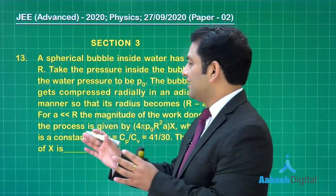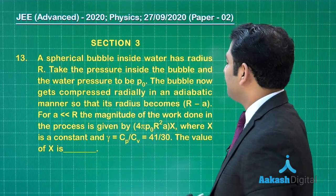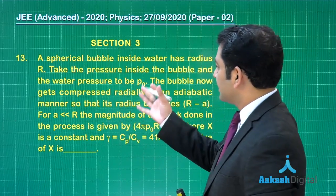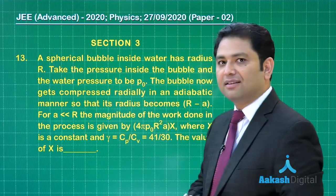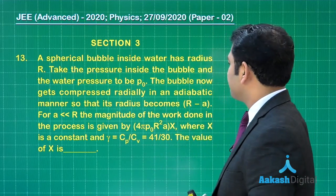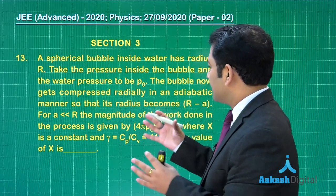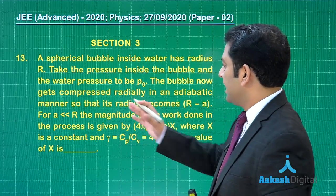Let us see what it says: there is a spherical bubble of radius R, the pressure inside and outside is p0, that means the surface tension is neglected, and this bubble now gets compressed radially in an adiabatic manner.